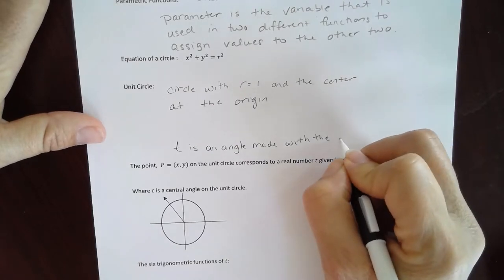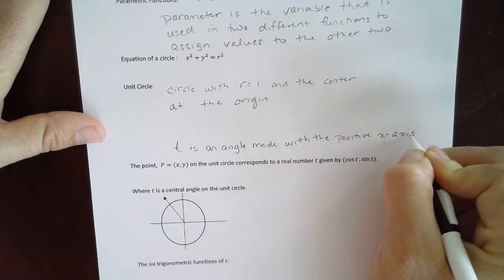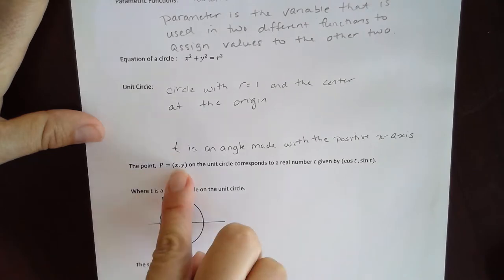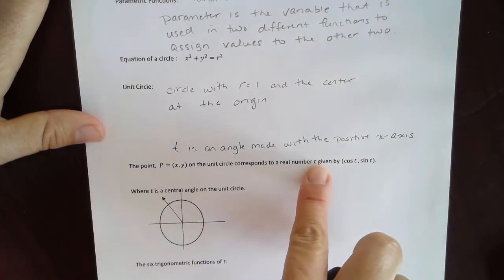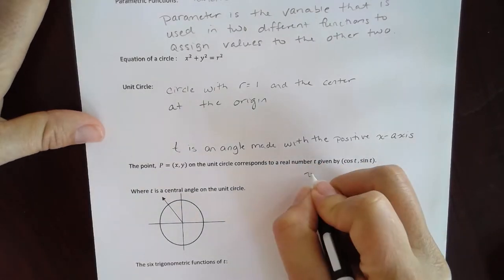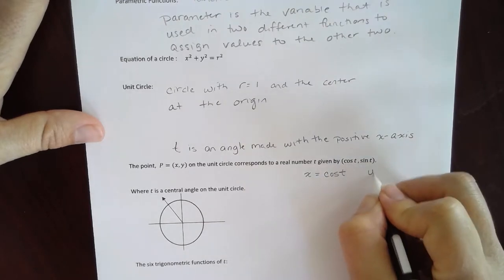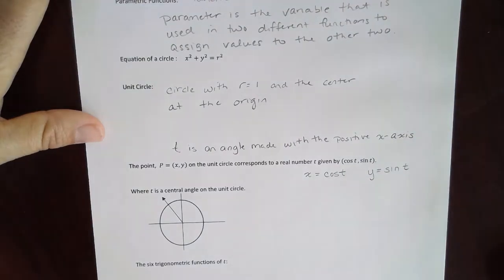The initial side is going to be on the positive x axis. Now the point P, which is made up of the ordered pair x and y on the unit circle, they correspond to this number t. And what we're going to say is x is equal to cosine of t and y will be equal to sine of t. And that's how we're going to put together our ordered pairs.